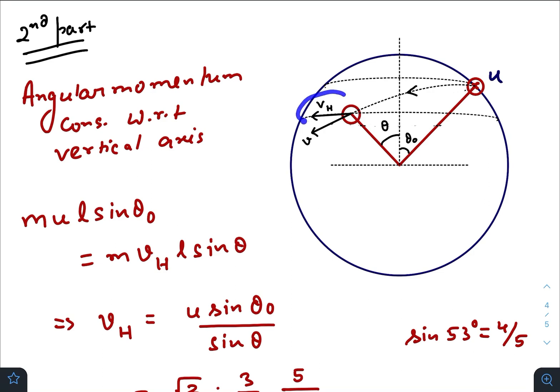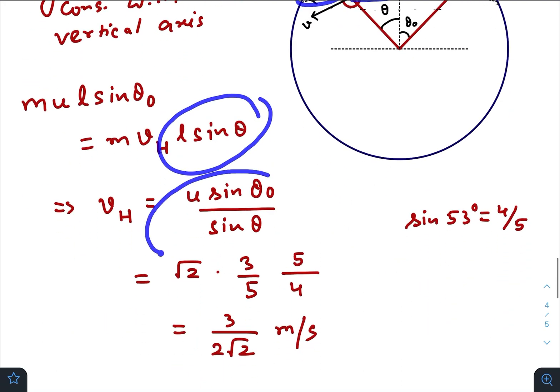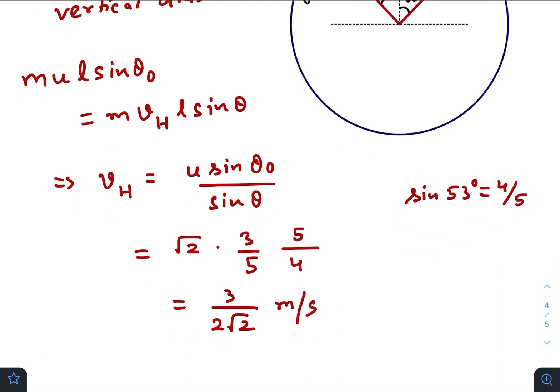This vₕ is also parallel to the plane where the bottom most point of the rod is connected. So angular momentum at this instant would be mvₕL sin θ. vₕ is this one—horizontal component of the velocity is this one. Just put the values. We have already got θ which is 53°, sin 53° is 4/5. Equating everything we get horizontal component of the velocity is (3/2)√2.